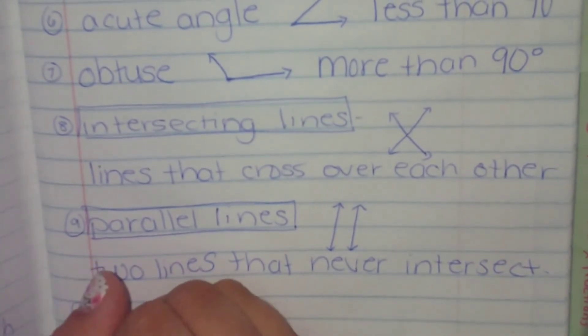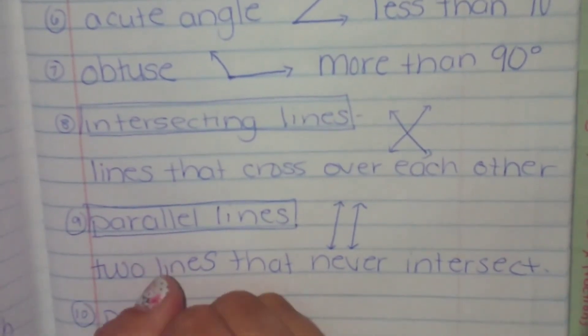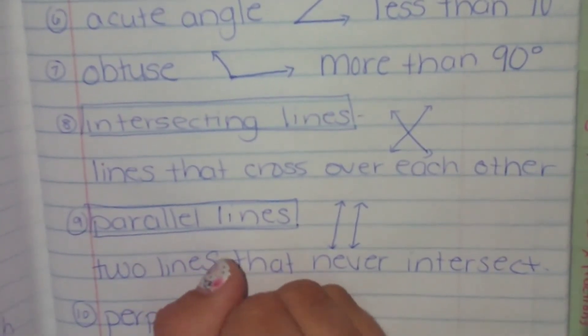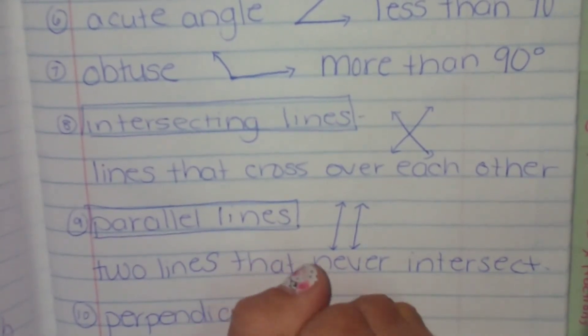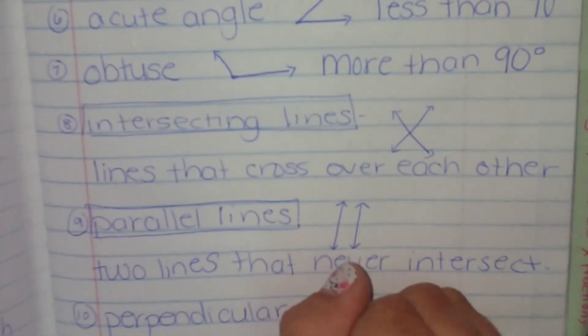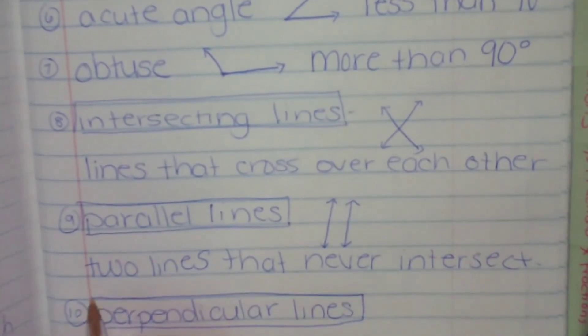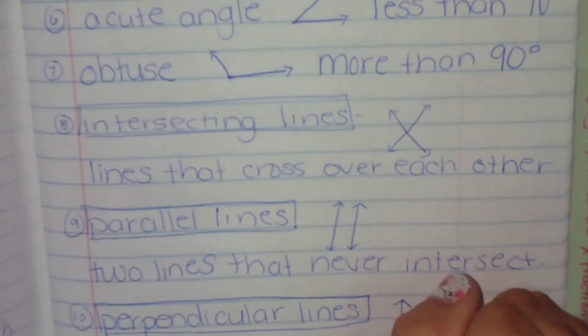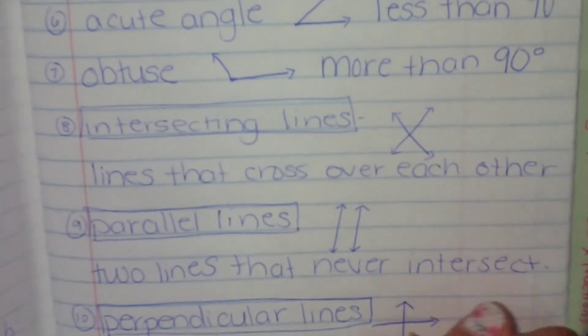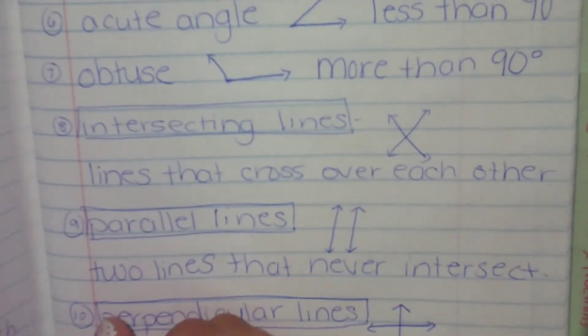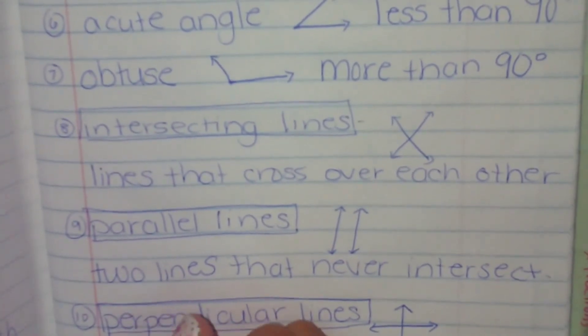And our last one is perpendicular. Most intersections are perpendicular. That means when they cross, they make a 90-degree angle with the lines. So it looks like this. So it's two lines.